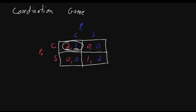How about player one going to the concert and player two going to the sporting event? Holding player one's strategy at concert, does player two have an incentive to change his strategy from sporting event? Of course he does — if player one is going to the concert and player two is going to the sporting event, but player two changed his action to go to the concert, he would earn two instead of zero. So he would have an incentive to deviate, meaning this cannot be a Nash equilibrium. The same argument applies when player two goes to the concert and player one goes to the sporting event — they will both have an incentive to deviate.